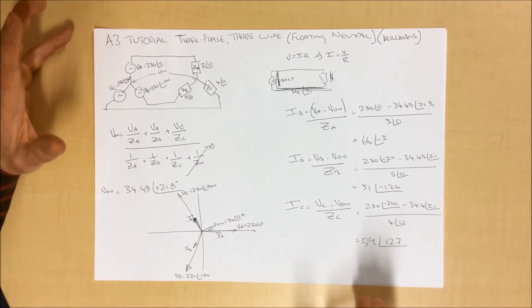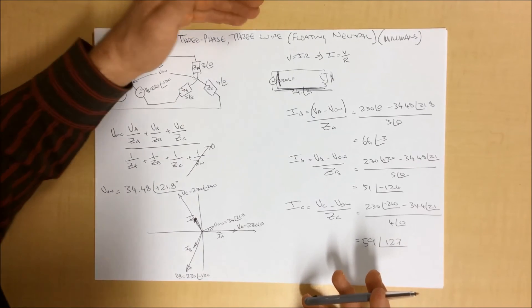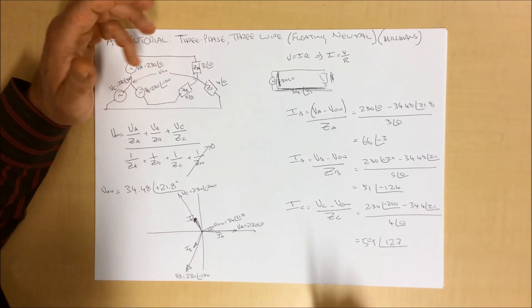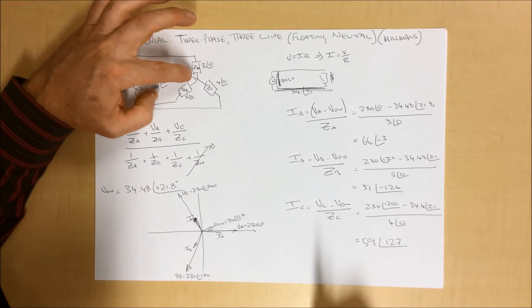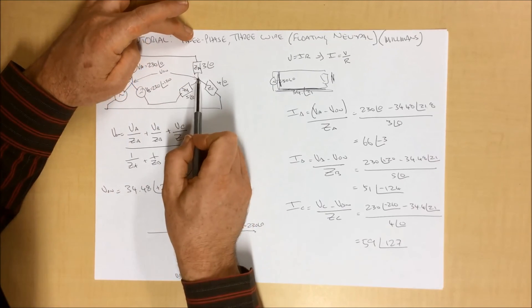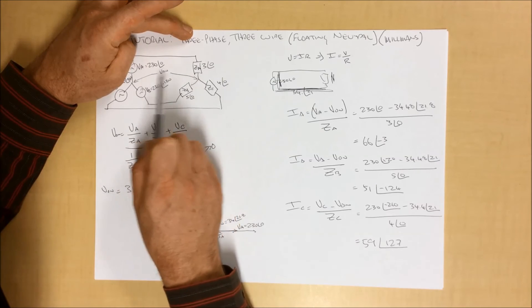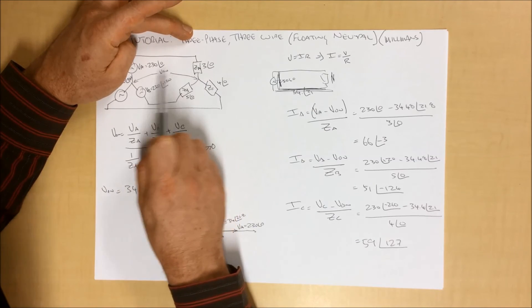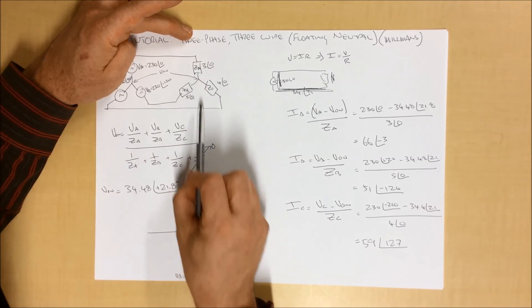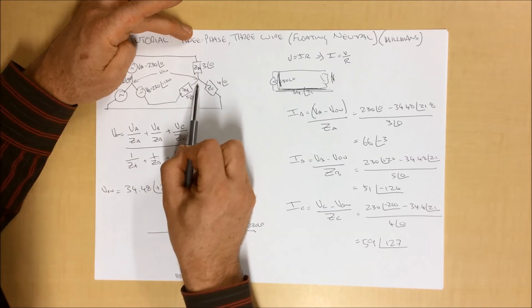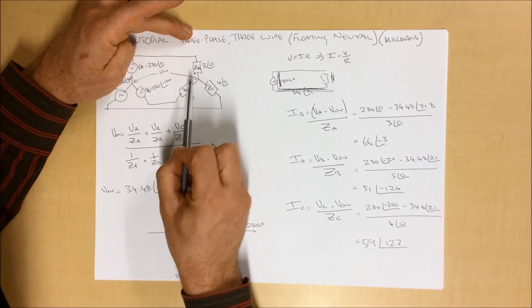So with this system, with this three-phase, three-wire system of the floating neutral, we've gone through and we've shown how this point here is not the same voltage as this point here. A potential difference exists between these two points, and we can find that by using Millman's theorem in an unbalanced system. In a perfectly balanced system, those voltages would be the same, but in an unbalanced system, they are not.